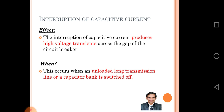Interruption of capacitive current: the effect of interrupting capacitive current produces high voltage transients across the gap of the circuit breaker. This occurs when an unloaded long transmission line or a capacitor bank is switched off.